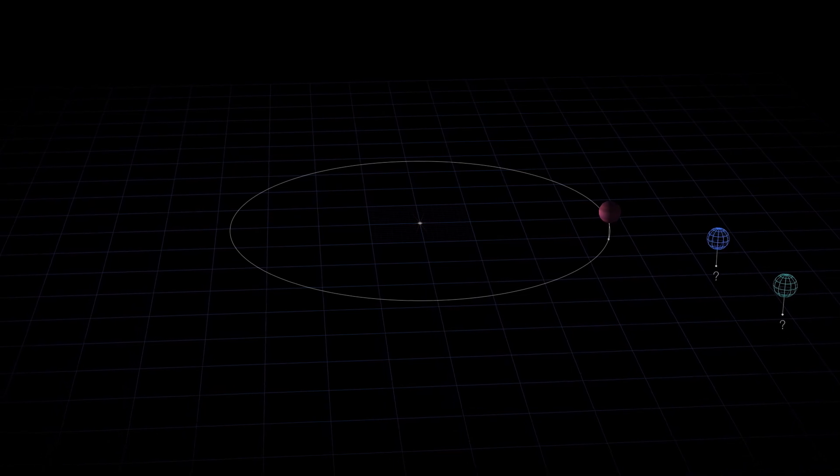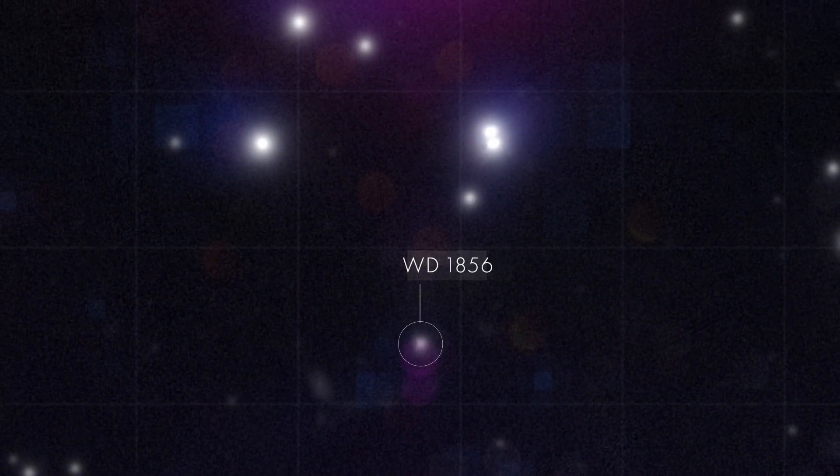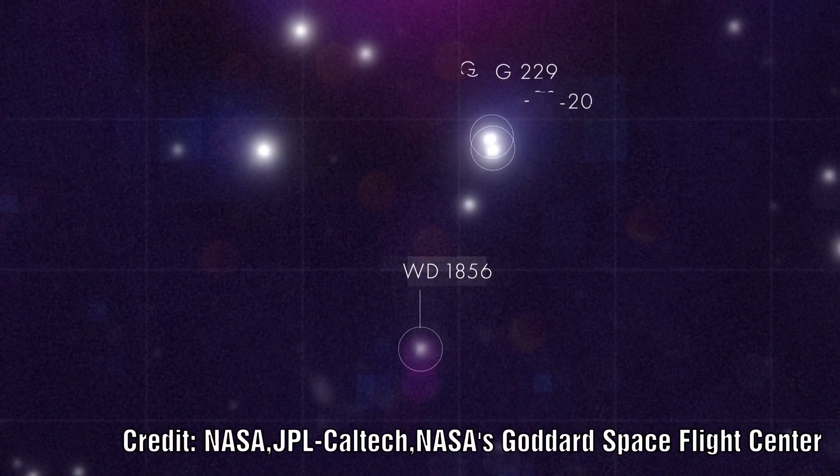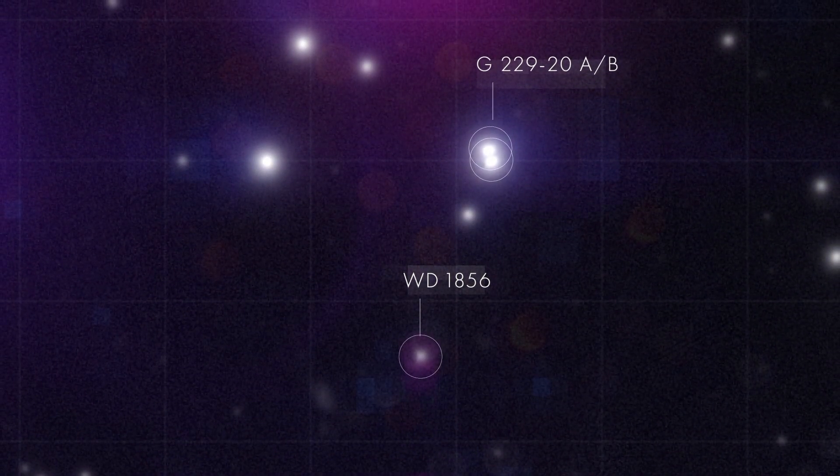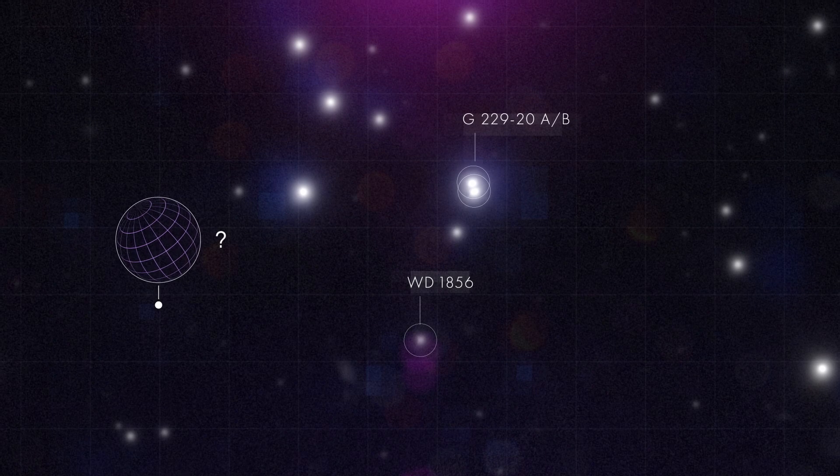Other possible scenarios that they speculate on include a gravitational tug from the two stars in the system, which are both red dwarfs, over billions of years and a flyby from a rogue star perturbing the system.